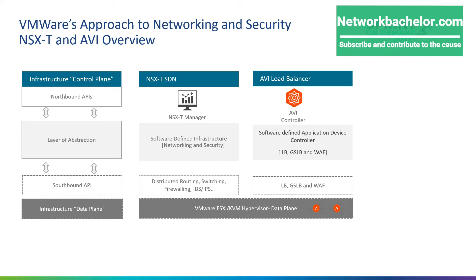Both NSX-T and AVI Load Balancer work on an SDN-based architecture. With an SDN-based architecture, you have an SDN controller and a data plane. The SDN controller takes care of all management aspects — configurations, policy definitions, operations, etc. The data plane processes traffic based on the policy it receives from the SDN controller. For NSX-T, the SDN controller is the NSX-T Manager itself, and the data plane is a VMware ESXi-based or KVM-based hypervisor.